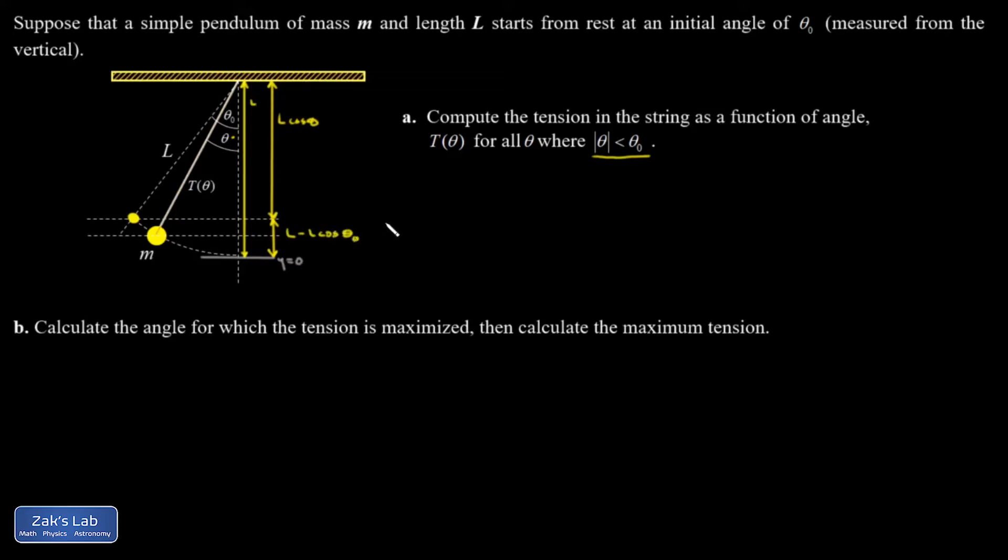The expression is similar if I just go to a general angle theta. It's just that it's going to be L minus L cosine theta instead of theta naught. So I think we're all set up here. I'm going to say E initial equals E final. I'm just comparing these two moments here. My initial is where I started at theta naught, and my final is just some arbitrary point in between.